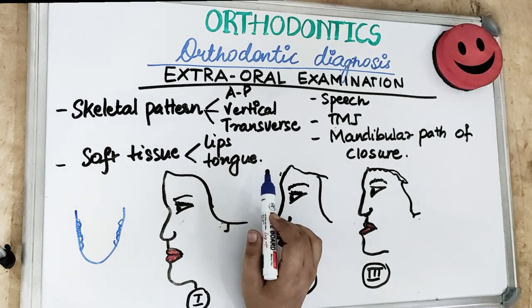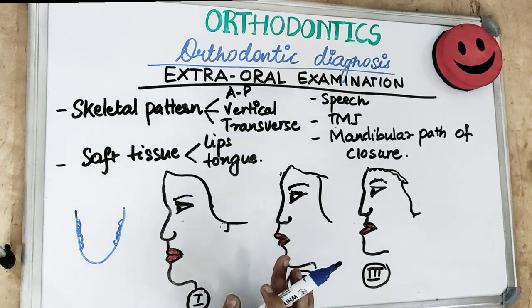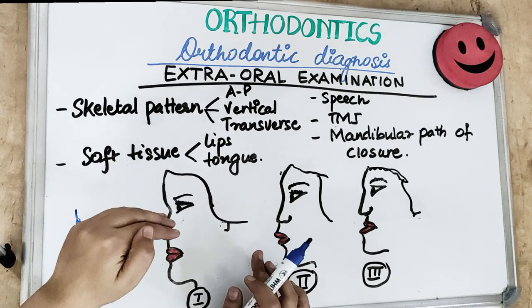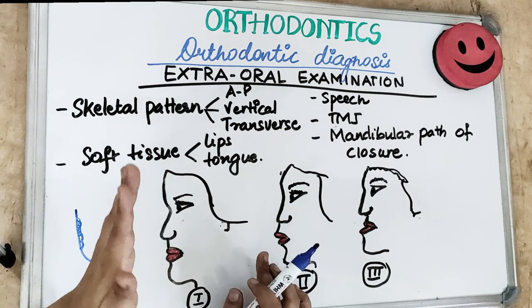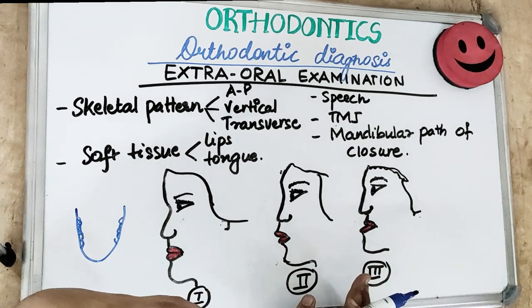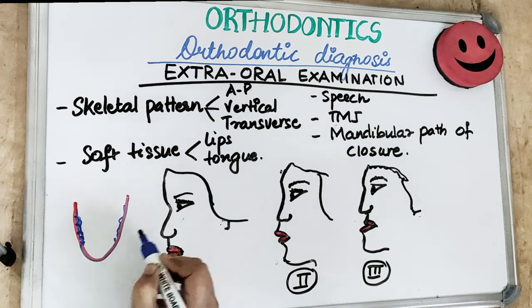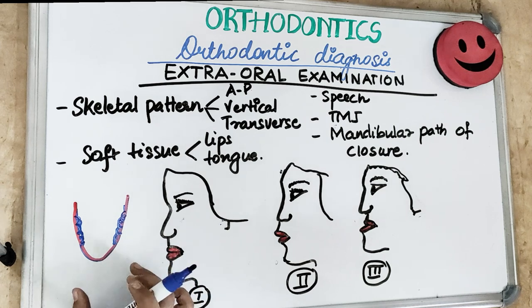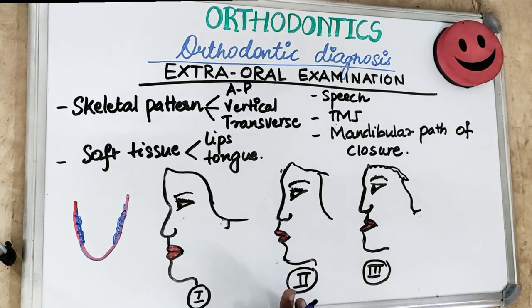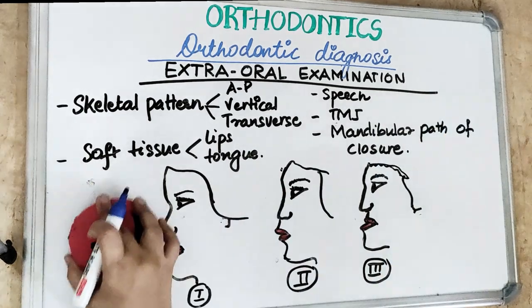Tongue examination comes under intraoral examination, but I'll briefly mention it here. Abnormalities in the tongue can upset muscular balance and equilibrium and cause malocclusion. Ask the patient to protrude the tongue and check for a scalloped margin — imprints on the lateral margin of the tongue indicate a large tongue. Also ask the patient to touch the tip of the nose with the tongue; if they can reach it, they have a long tongue.